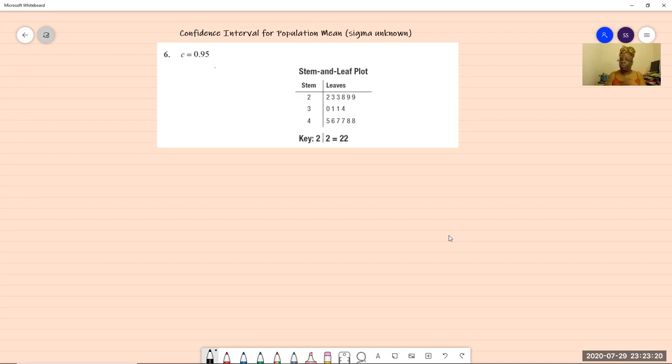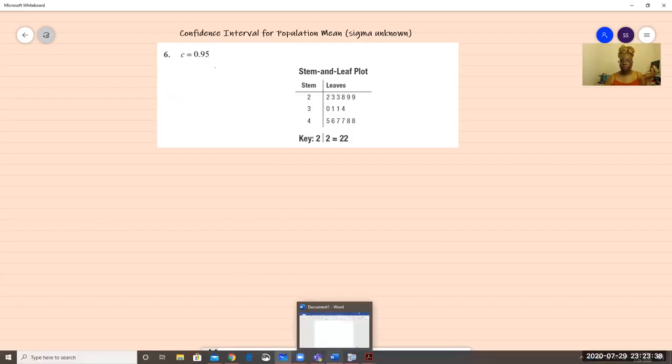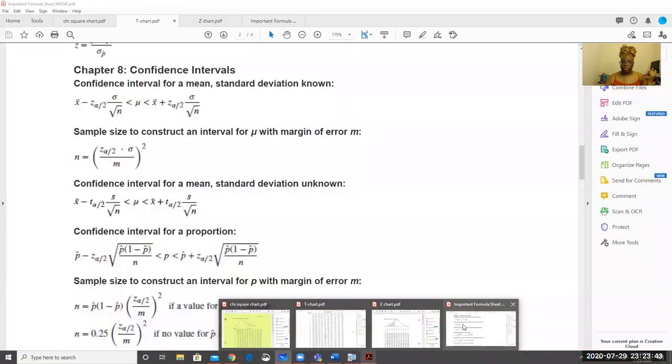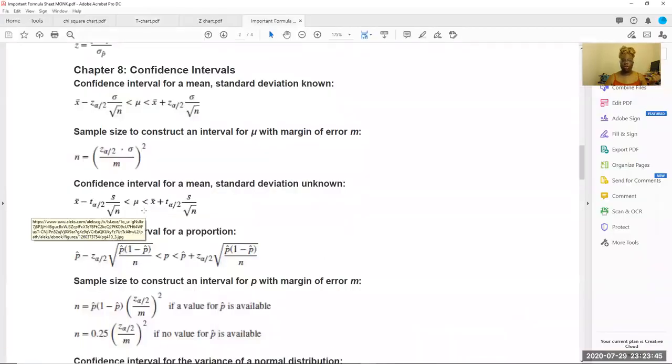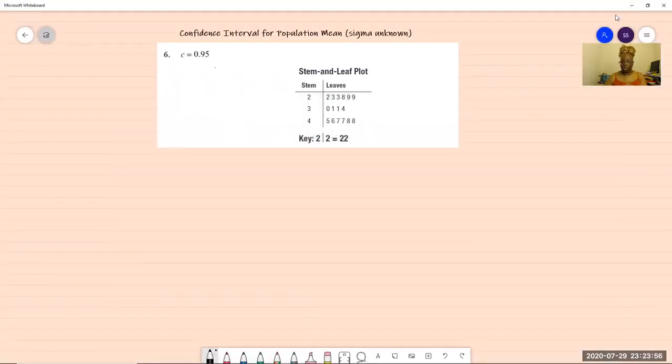So the thing that I like to do is write down my knowns or write down what I need or write down the formula that I need so that I can focus exactly on what I'm going to get. So as we said earlier, we're looking for a confidence interval. We're looking for a mean confidence interval, which means your population mean. Here's a formula sheet here. Confidence interval for mean with the standard deviation unknown.